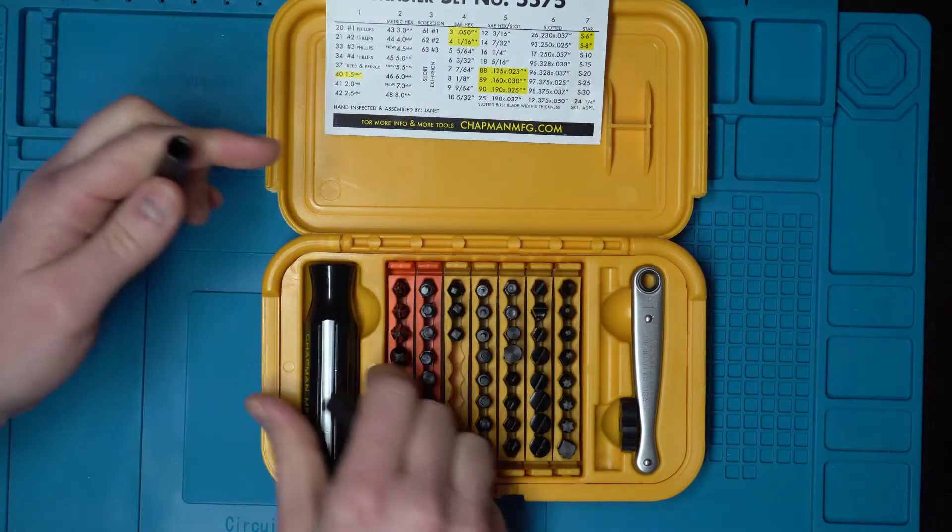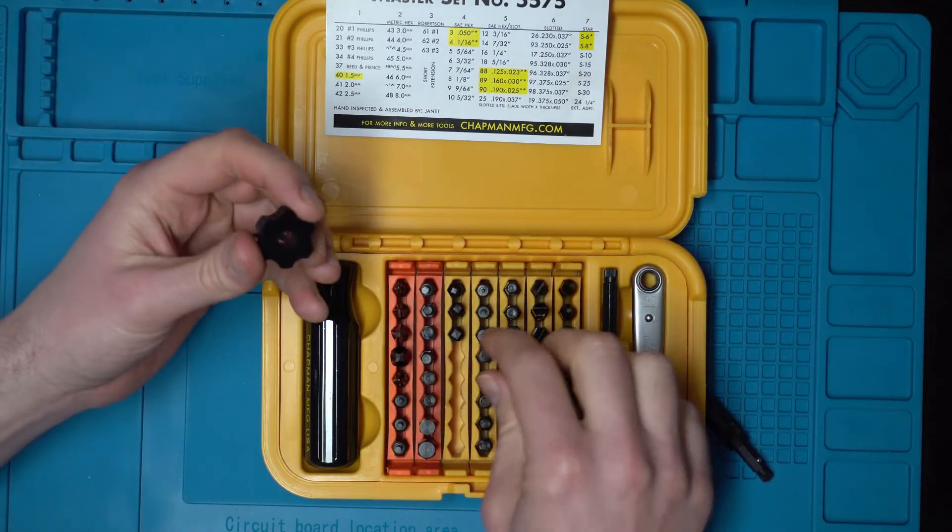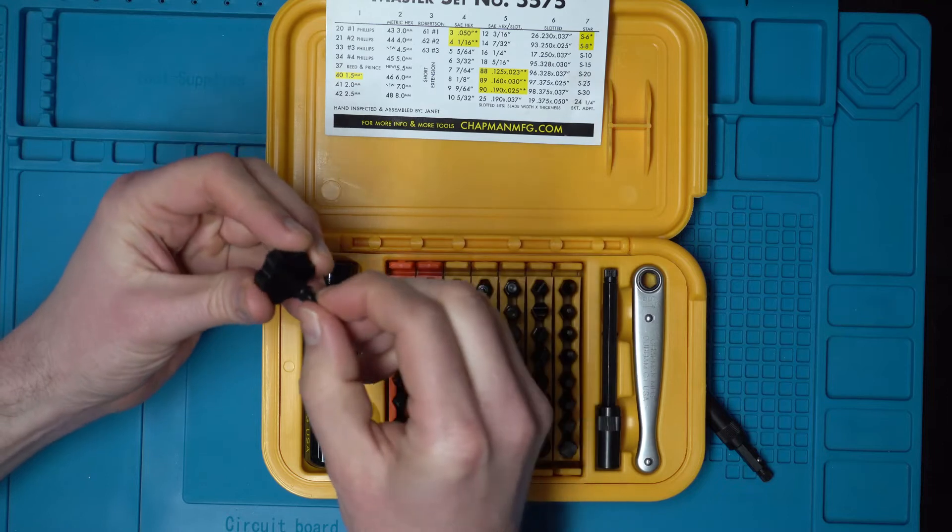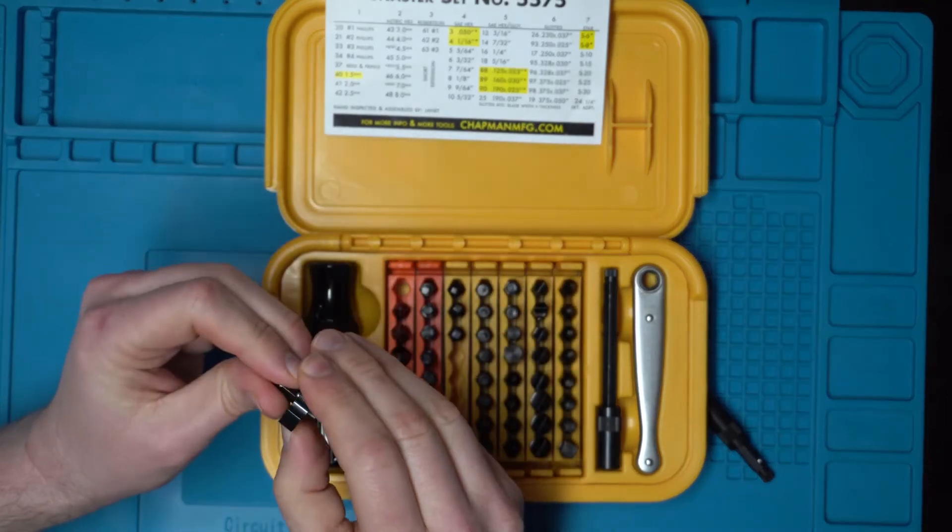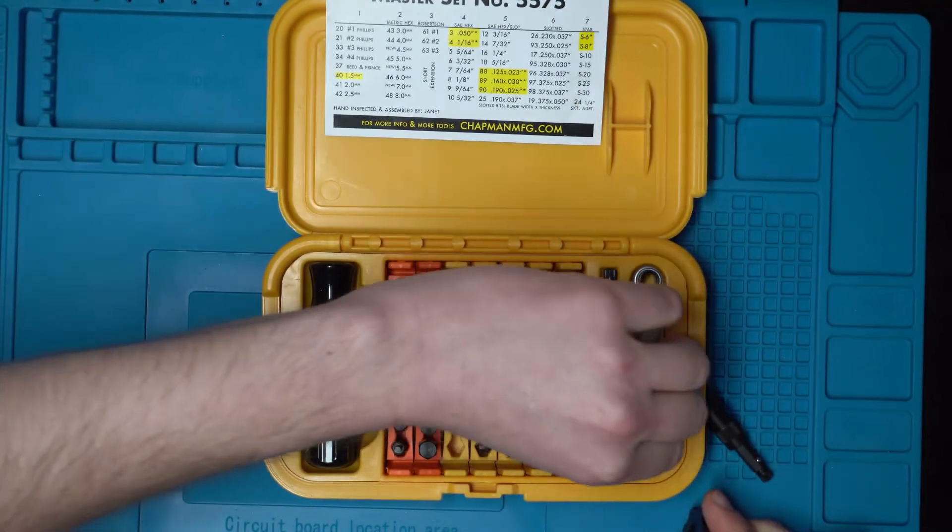It also comes with two additional options. One is this handle here if you want to do just hand tightening, which is very handy for when you're doing some fine work.